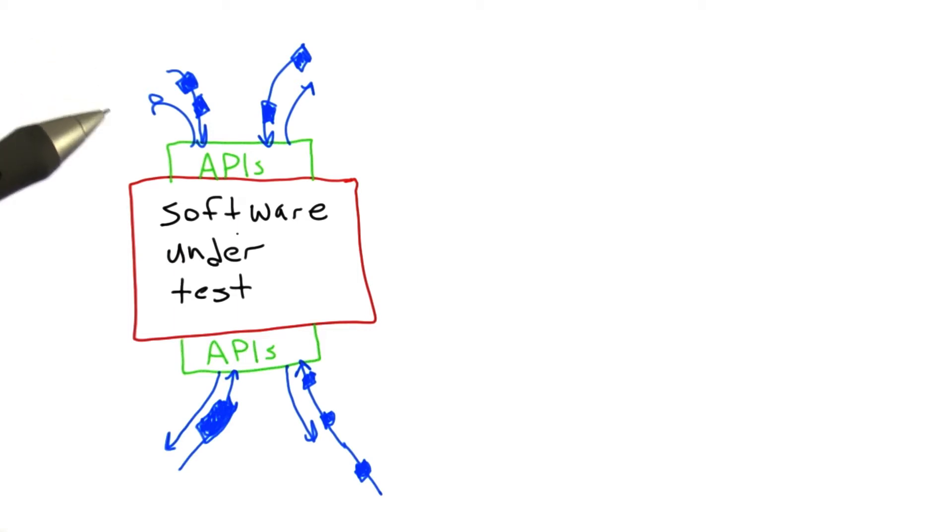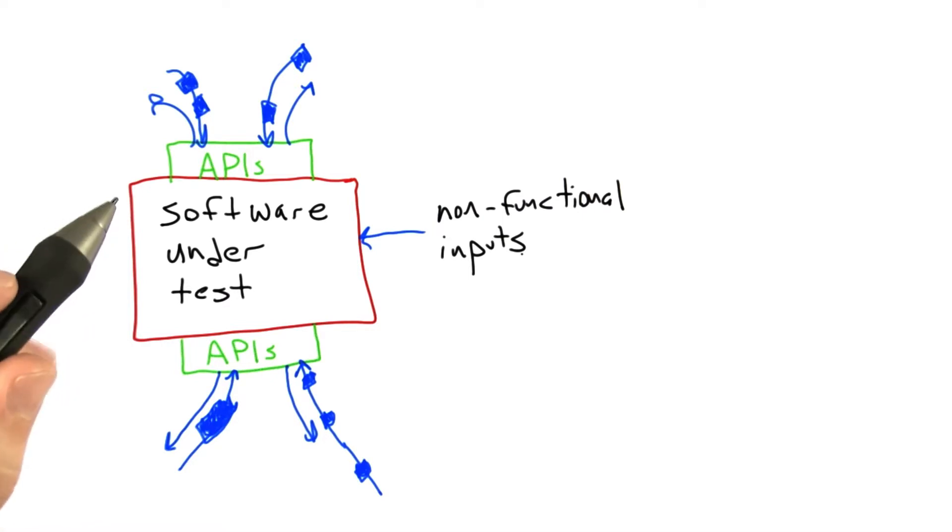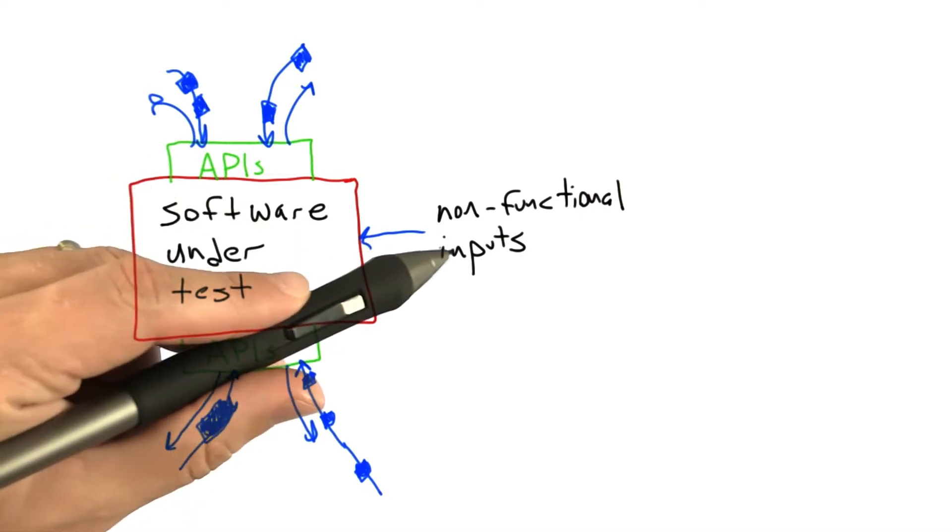What we're doing here is continuing to dig into some of the nuances of testing software, and we're going to keep looking at things that can make testing hard. The final issue I want to talk about in this general vein of things that can complicate testing is what I like to call non-functional inputs.